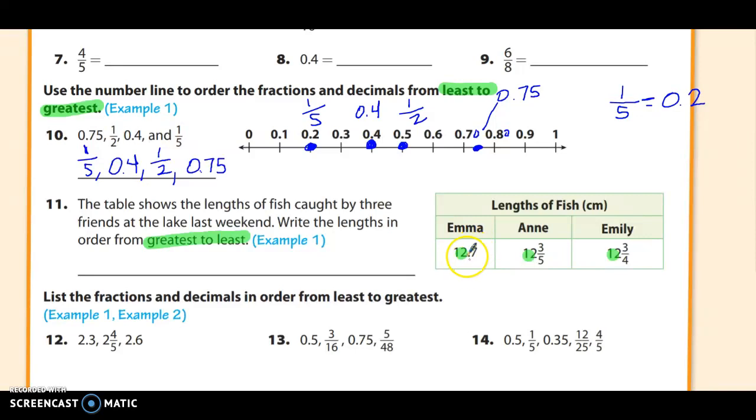One thing I could do is convert the decimal into a fraction. And it would be 7 tenths. The problem with that is that I'd have 7 tenths, I'd have tenths as a denominator, and fifths as a denominator, and fourths as a denominator. I don't know if that's the easiest way. It might be. I'm not sure. Or I could convert the other ones to a decimal. I think that might be just a little bit easier.